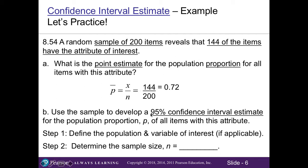In part b, it asks you to use the sample to develop a 95% confidence interval estimate for the population proportion p of all items with this attribute. So in step one, we don't have to define the population or variable of interest really because there's no story. But in step two, we'll go ahead and identify our sample size. That's 200 items were sampled.